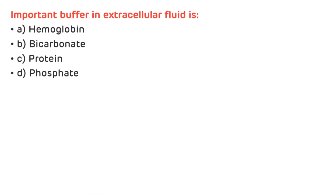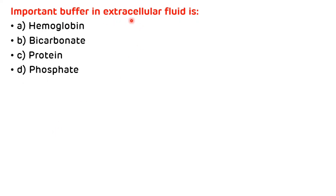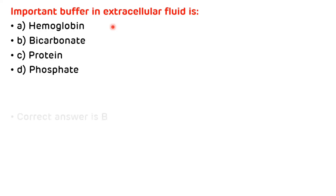MCQ 1: The important buffer in extracellular fluid is — options: hemoglobin, bicarbonate, protein, phosphate. The answer is B — bicarbonate — because hemoglobin is an example of an intracellular buffer.